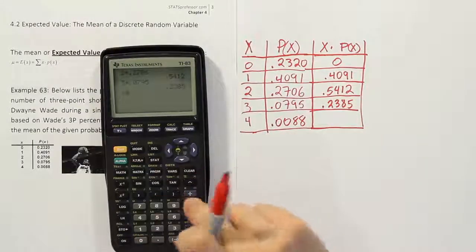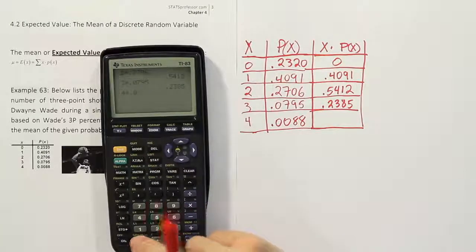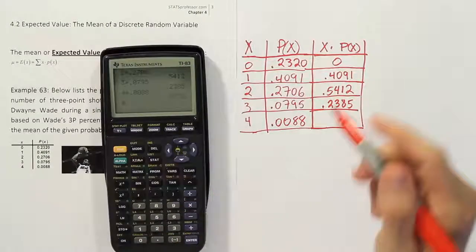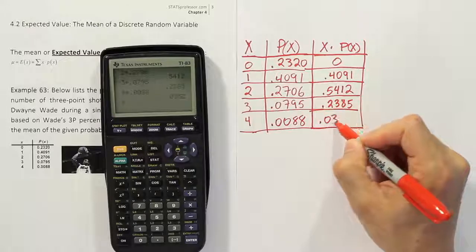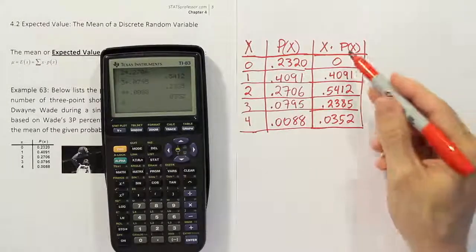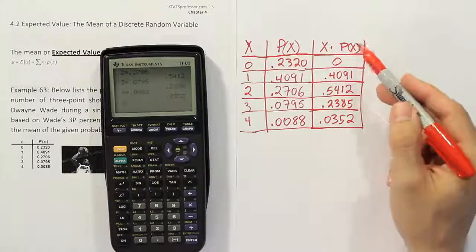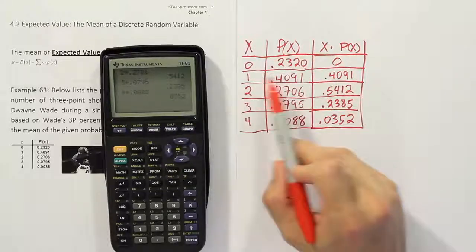And then lastly, we'll do 4 times 0.0088, and again, we get 0.0352. Okay, so there's our x times p of x column, which we created simply by multiplying straight across.